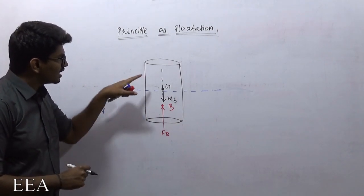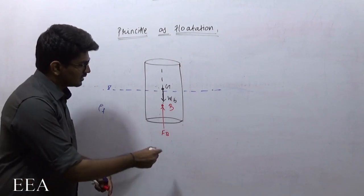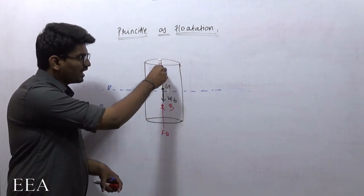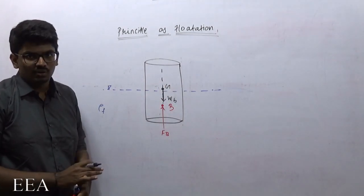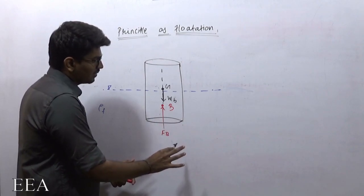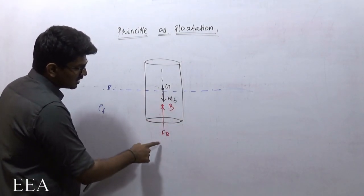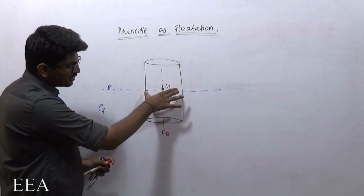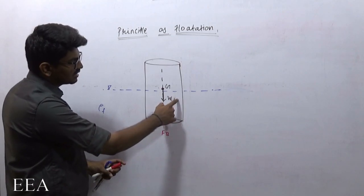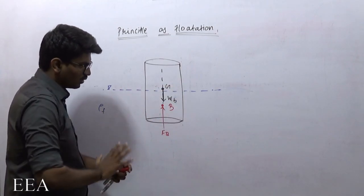Now, when can I say that this body is going to float? Only if the buoyancy force acting upward equals the weight of the body acting downward. If the weight of the body and buoyancy force are not the same — for instance, if the weight of the body is more than the buoyancy force — then this will start to move downward because the net downward force will be more.